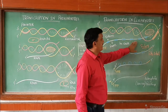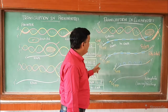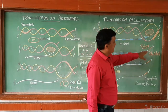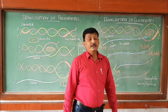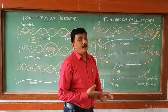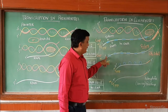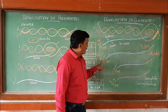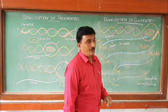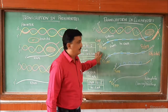This heterogeneous nuclear RNA has a 5' end and a 3' end, and it undergoes processing. As part of processing, at the 5' end, there is adding of methyl guanosine triphosphate. This process is known as capping.